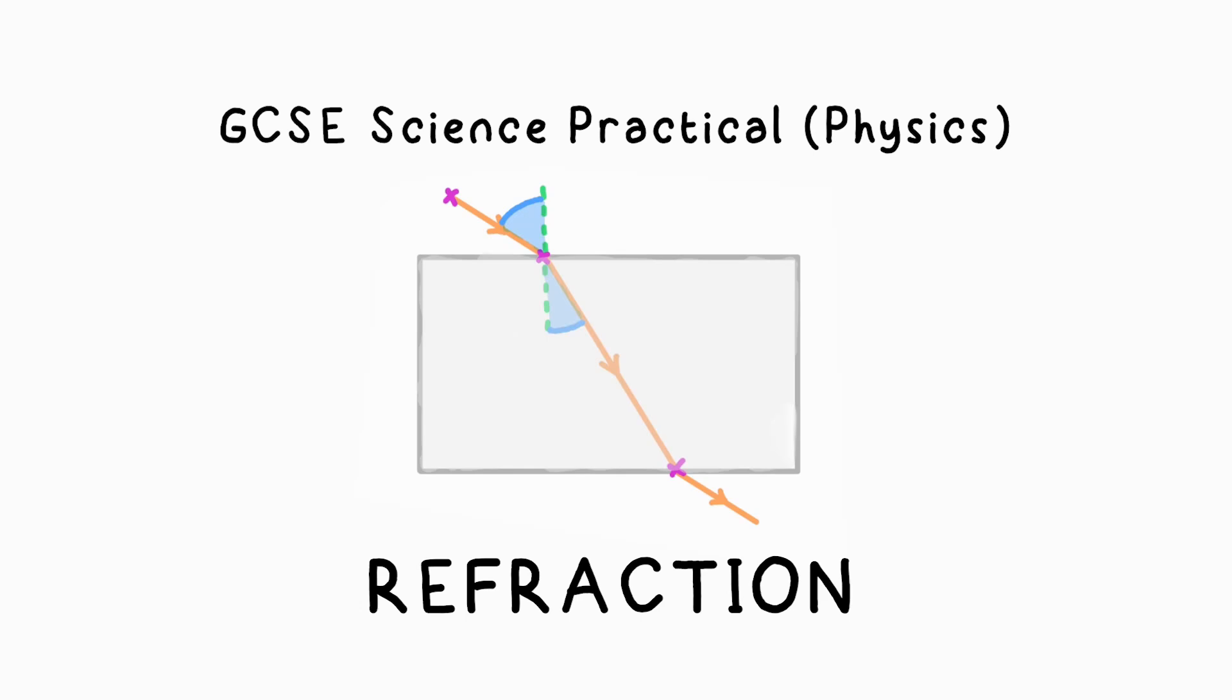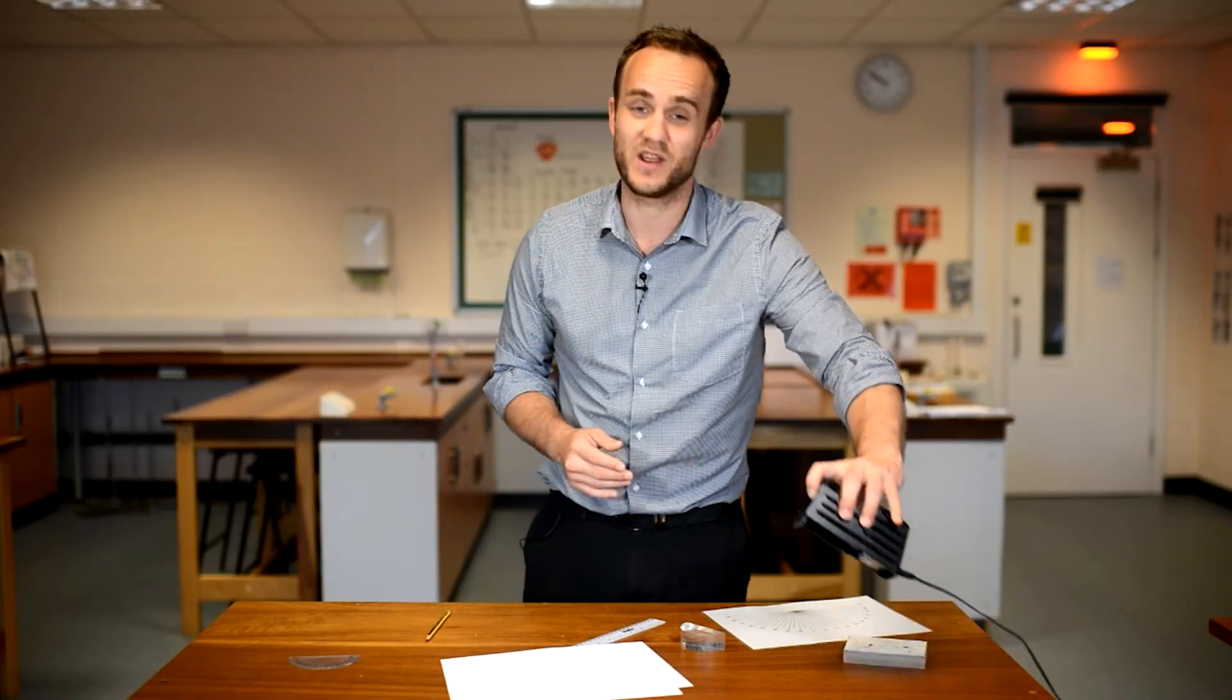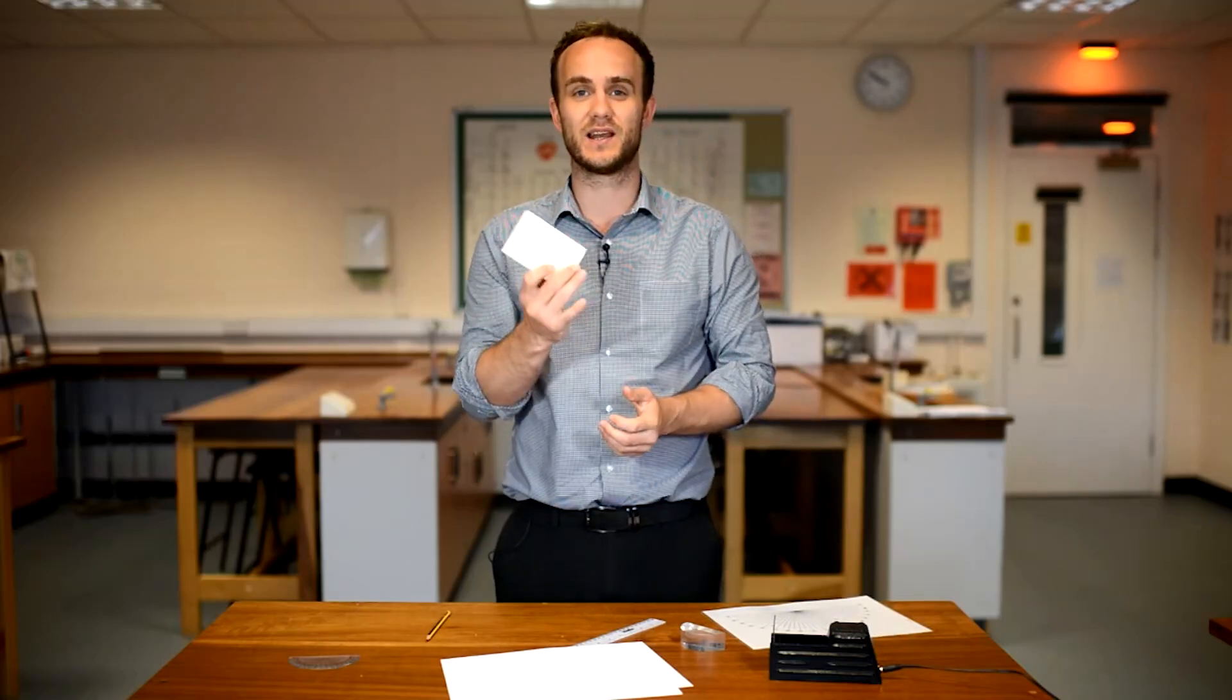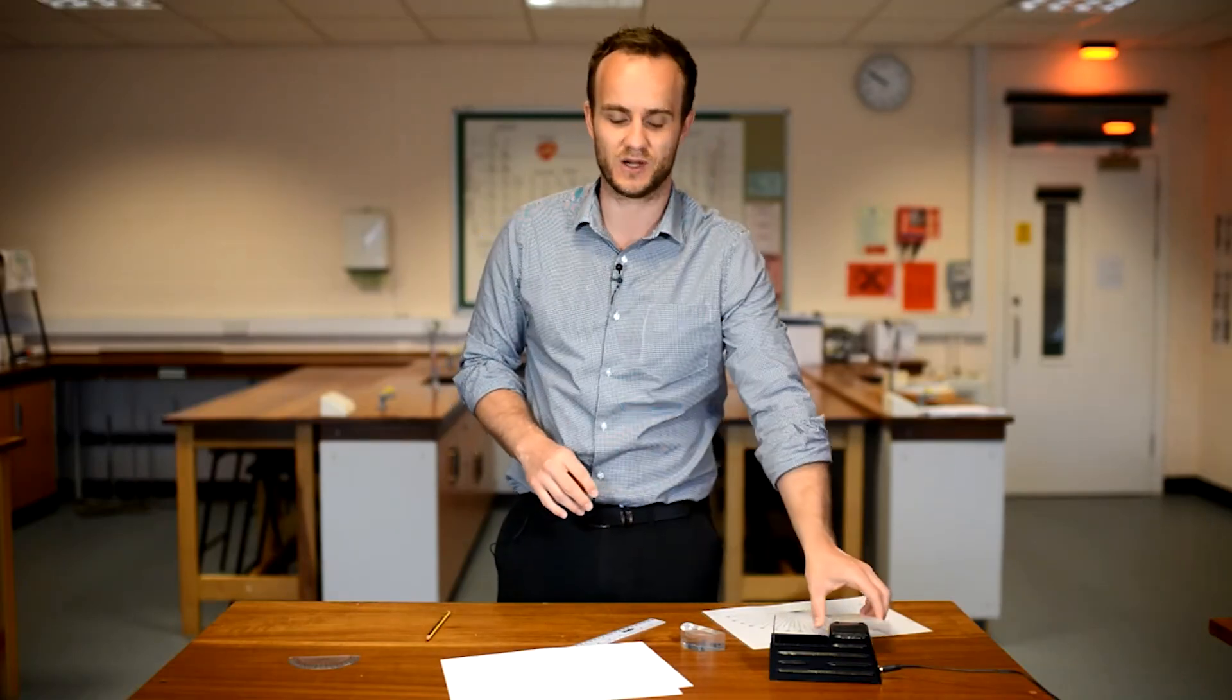I'm going to show you how to do the required practical on refraction for GCSE physics. What you're going to need for this practical is a ray box, that's just a little light source, a slit to make a nice straight ray that comes out of it, and a rectangular glass or perspex block.